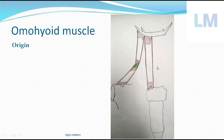The intermediate tendon overlaps the internal jugular vein (IJV), and the tendon itself is overlapped by the sternocleidomastoid. This intermediate tendon is located at the level of the cricoid cartilage — an important landmark.